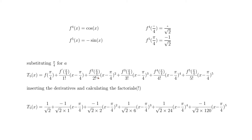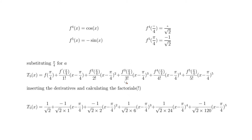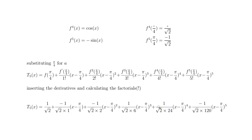The third derivative at π/4 was 1/√2, giving 1/(√2 × 6) times (x − π/4)³. The fourth derivative was +1/√2, giving 1/(√2 × 24) times (x − π/4)⁴. The fifth derivative at π/4 was −1/√2, giving (−1/√2) divided by 120, times (x − π/4)⁵.